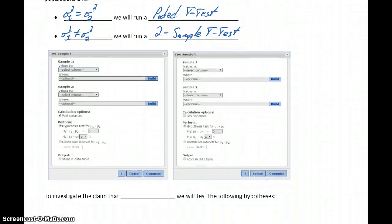In terms of using StatCrunch, the process for selecting this test is the same. We'll go to t-stats and select two-sample, but the difference is going to be whether we leave that pooled variances option checked.